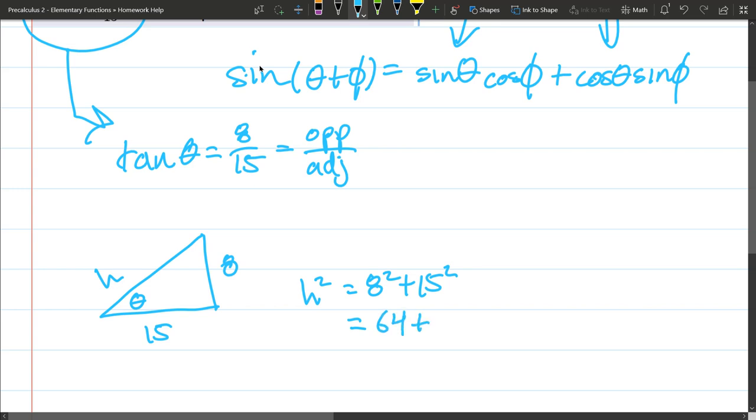So hypotenuse squared equals 8 squared plus 15 squared. So that's 64 plus 225, and whatever that is. Let's see, 9, 8, 289. Let's write that a little better. All right. So that's our hypotenuse. Oh, this is hypotenuse squared. So hypotenuse is square root 289.